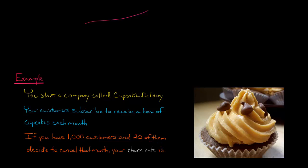So then your churn rate, to calculate it, you take the 20 that canceled divided by the 1,000 customers, and that gives you 0.02. If you multiply that by 100 to convert it to a percentage, it's easier to interpret, your churn rate would be 2%.